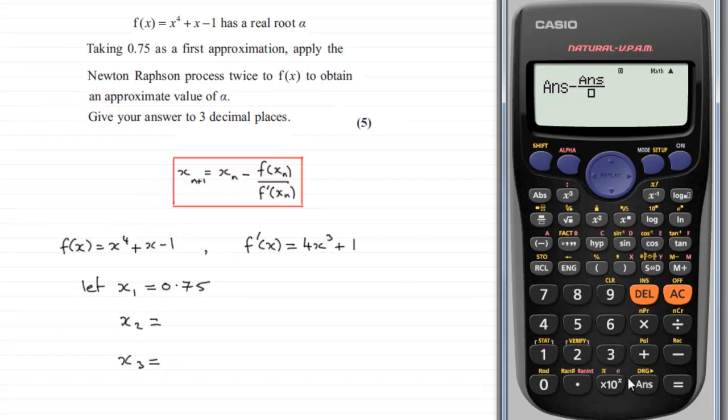So we've got answer to the power 4 and then we just move the cursor forward and then plus answer and then minus 1. And now we need to just push this down to the bottom.